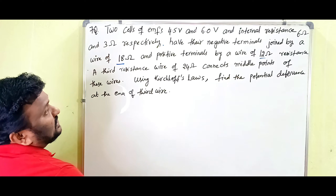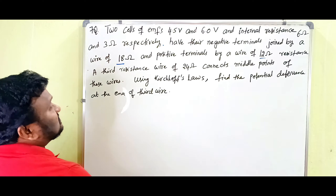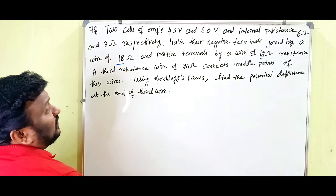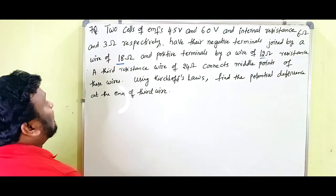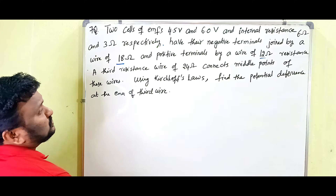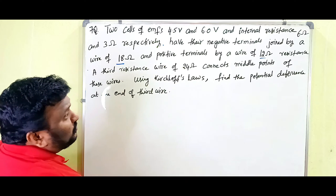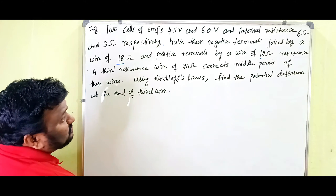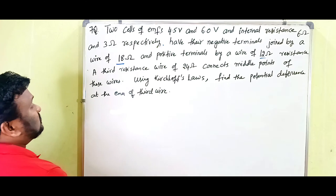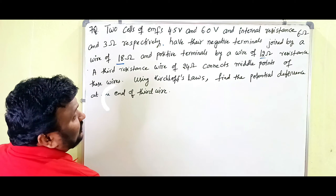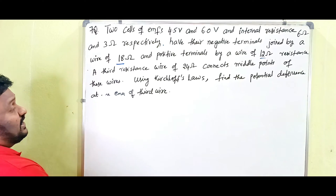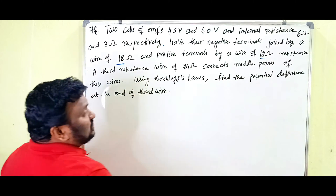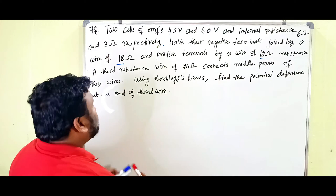Two cells of EMFs 4.5 volts and 6.0 volts and internal resistances 6 ohms and 3 ohms respectively. The negative terminals are joined by a wire of 18 ohms and the positive terminals by a wire of 12 ohms resistance. A third resistance of 24 ohms connects the middle points of these wires. Using Kirchhoff's Laws, find the potential difference at the ends of the third wire. It seems to be very big but it is only very simple.